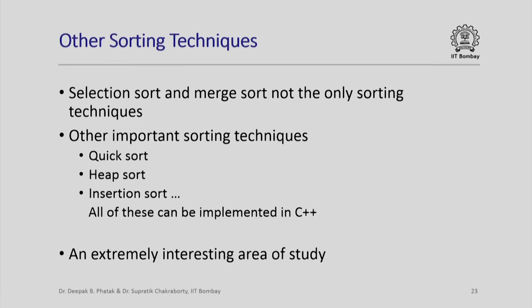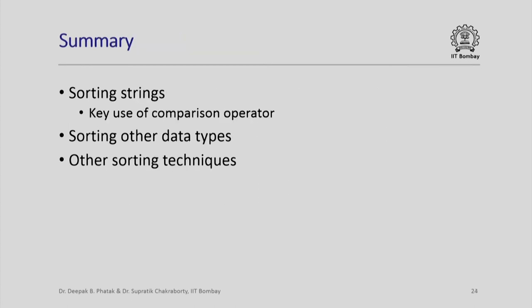Are there other sorting techniques out there? Yes, of course. Some important ones include quicksort, heapsort, and insertion sort — all of which can be implemented in C++. However, we will not have time to study all of these in this course. Sorting is an extremely interesting area of study in computer science and programming. In summary, in this lecture we looked at how to sort strings and saw the key role of a comparison operator for lexicographic ordering. We also saw that the same ideas can be used to sort other data types given an appropriate comparison operator, and had a brief glimpse of sorting techniques beyond what we have already studied.